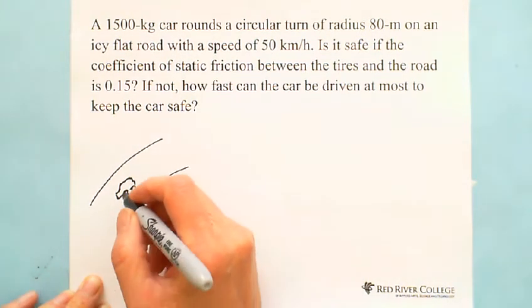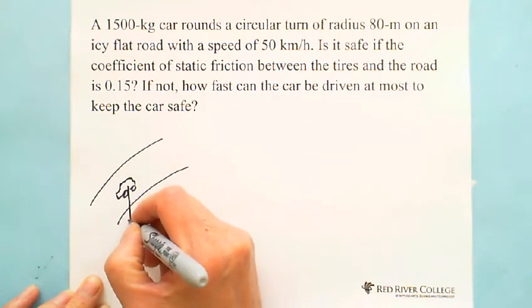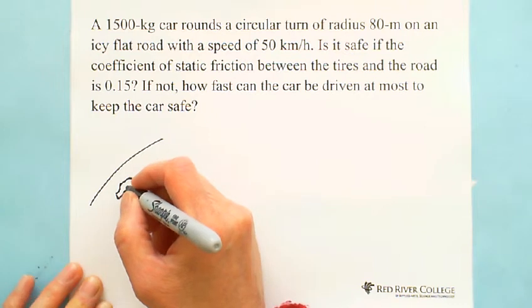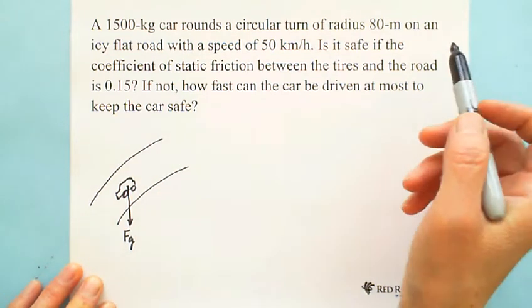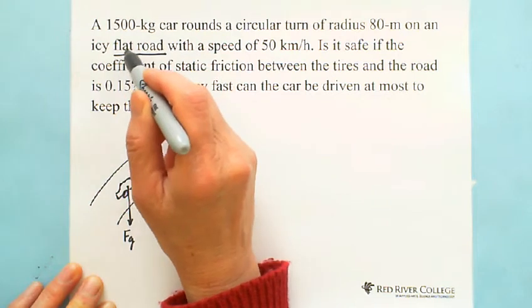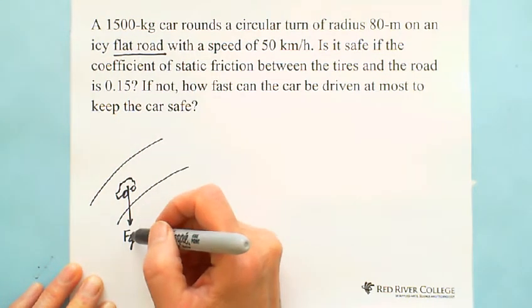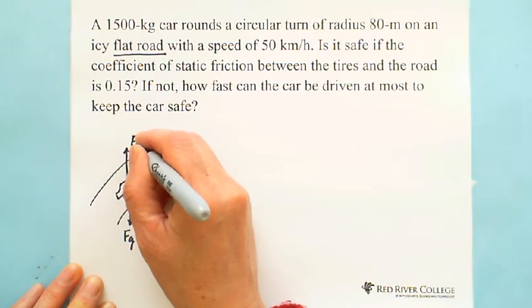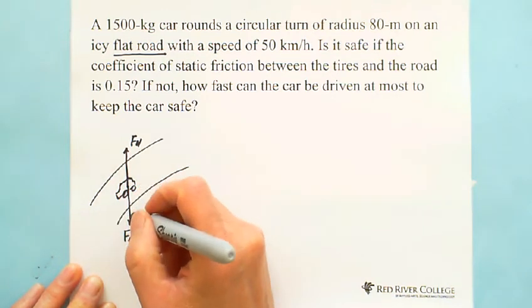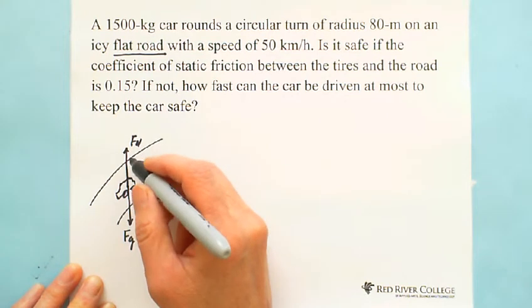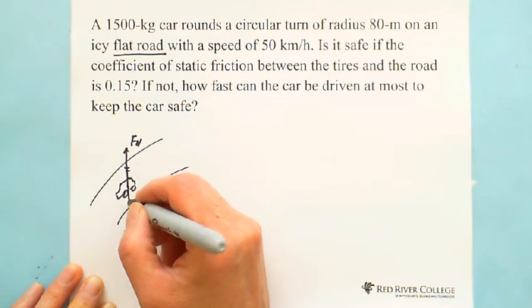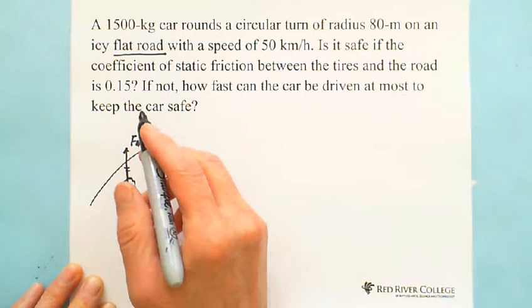And the free body diagram is, as we know, gravity always vertical down. And normal force, in this situation, because the question gives us information it's an icy flat road. That's what flat means. The normal force and the gravity are on the same vertical line, which is there is no component. On the other side, the normal force and the gravity are balanced. One is vertical down, the other is vertical up. That's why flat road.